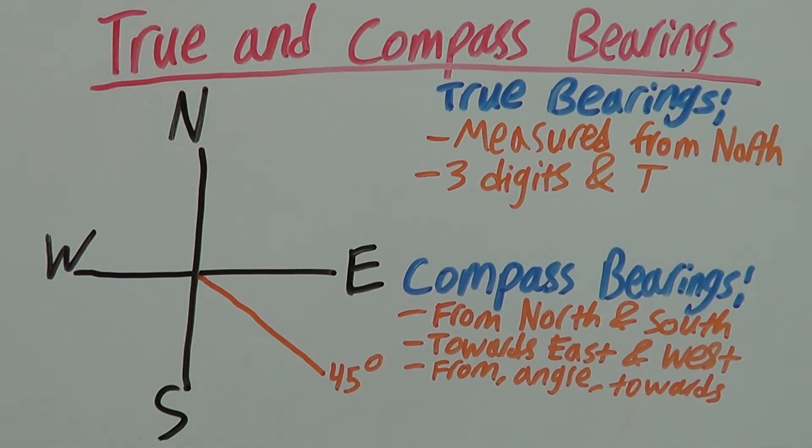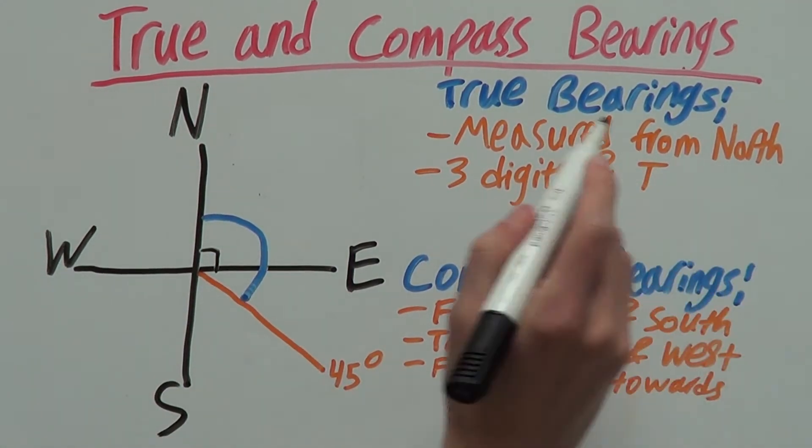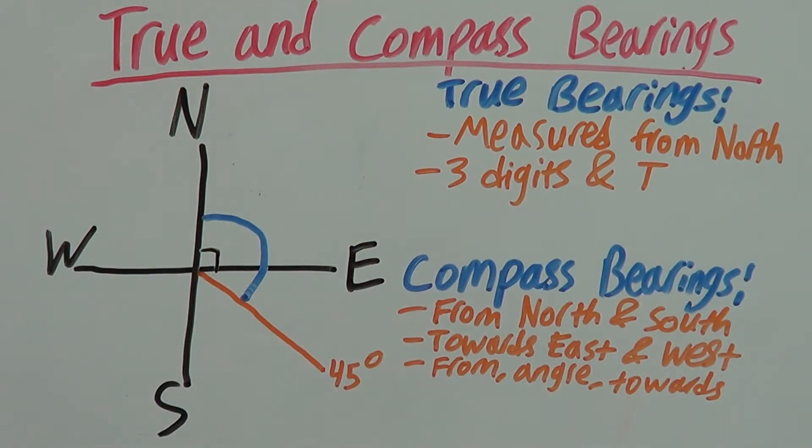Let's look at an example to help you understand this. First, let's find our true bearing. We measure from north to our angle clockwise.